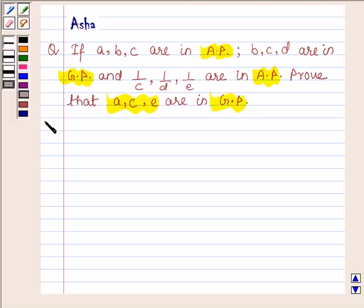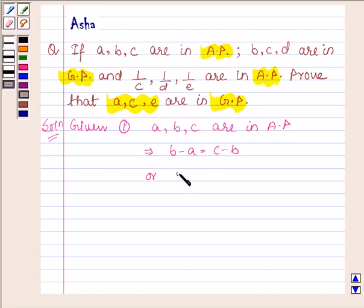Let us now start with the solution. Here we are given first that A, B, C are in AP. So this implies B minus A is equal to C minus B, or you can say that 2B is equal to A plus C.